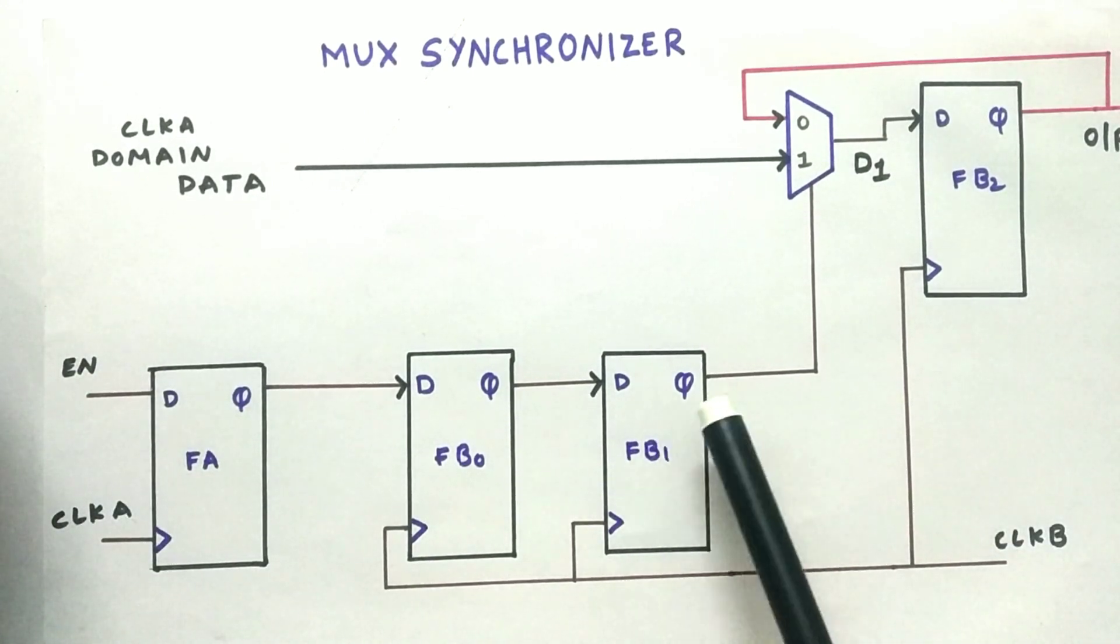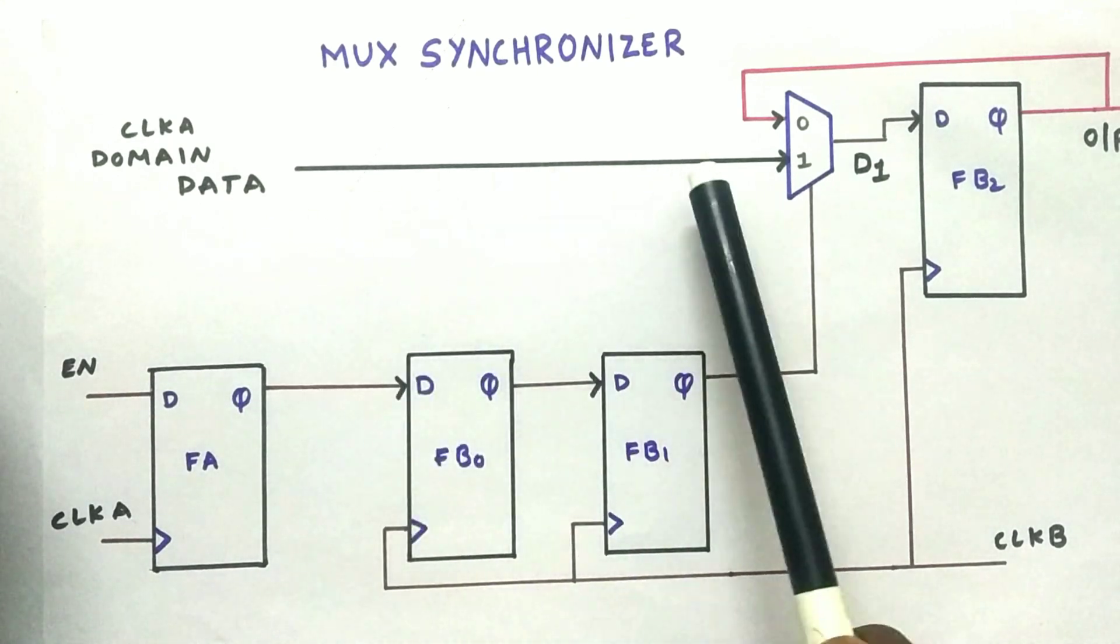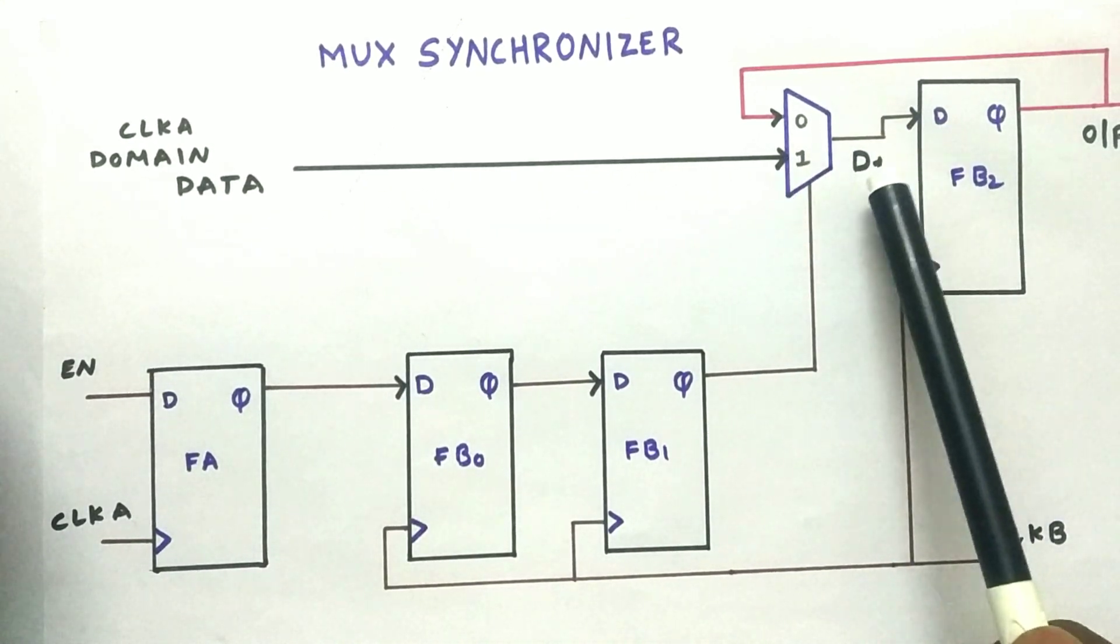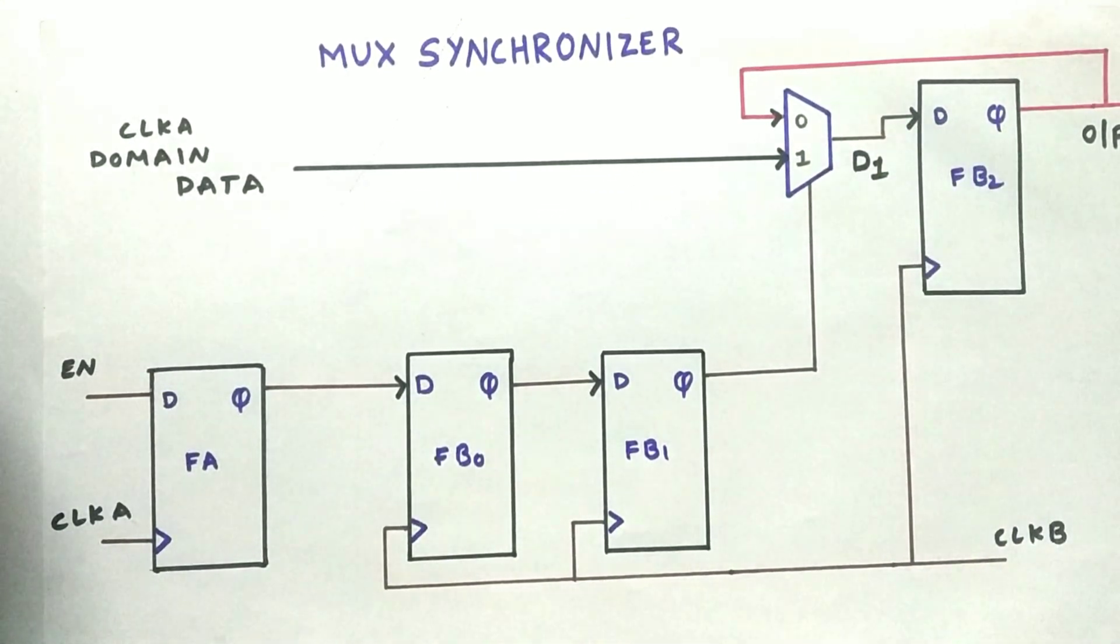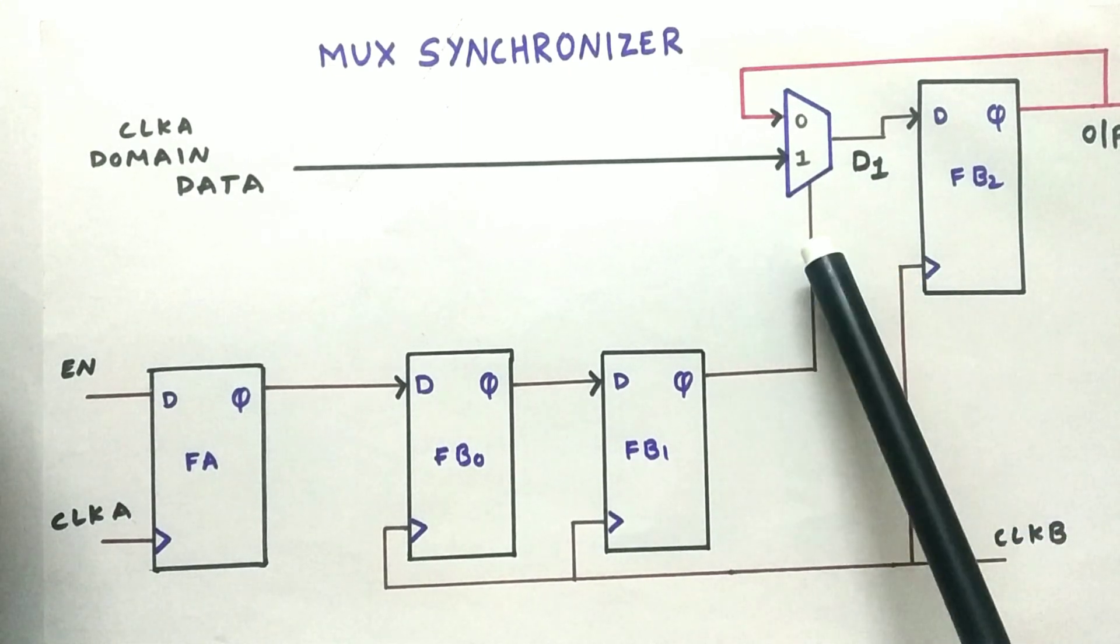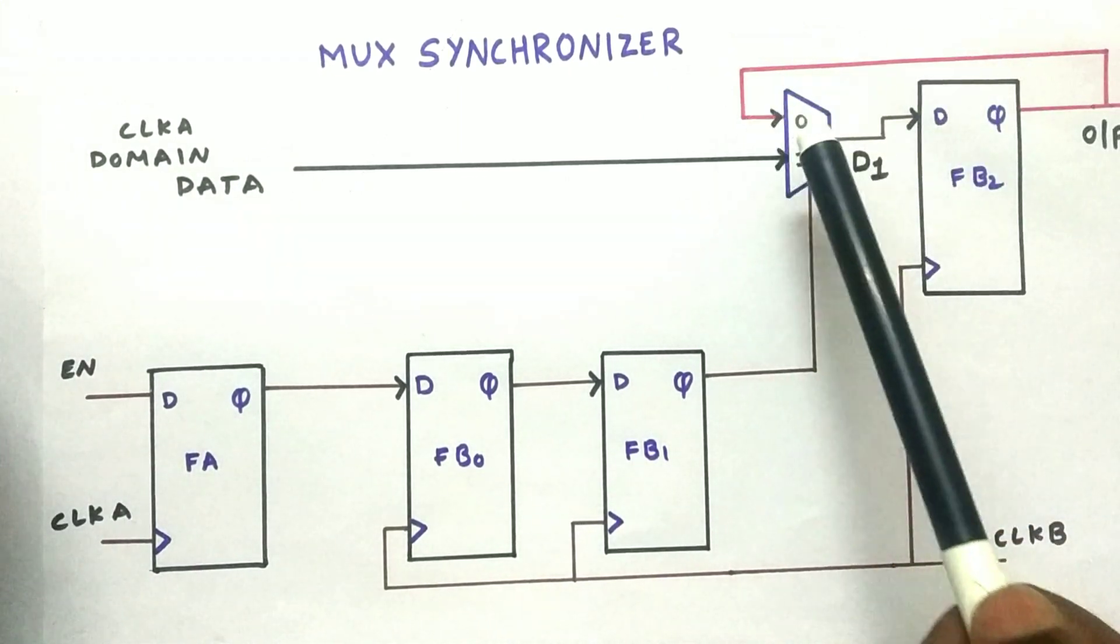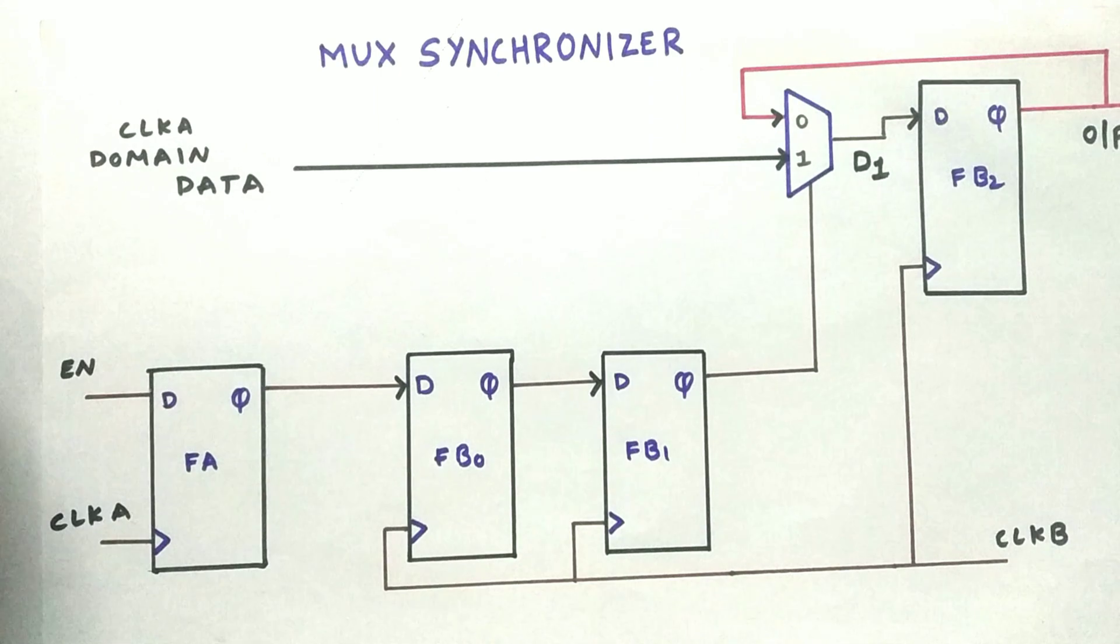Whenever it reaches clock B domain, then we will get our data at D1. And D1 will pass it to the output. And let us say that enable is not there, then we will feed back the previous data. It will continue the previous data.